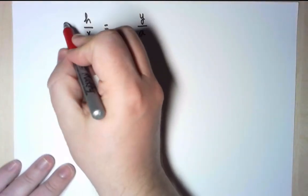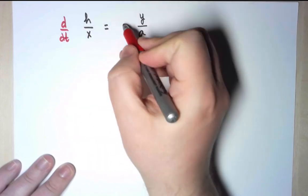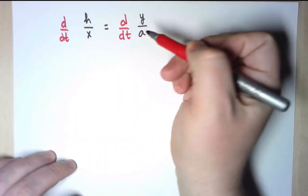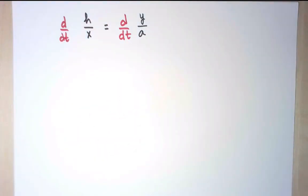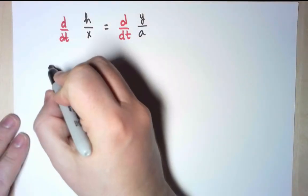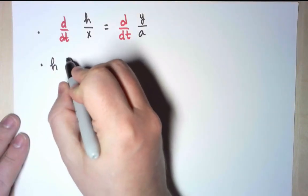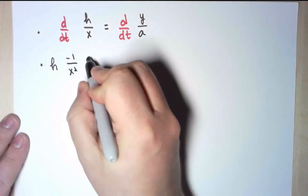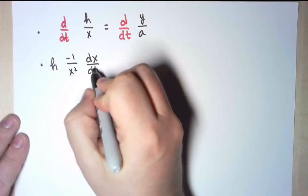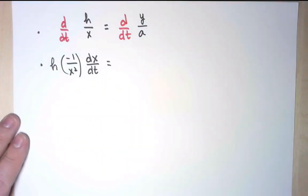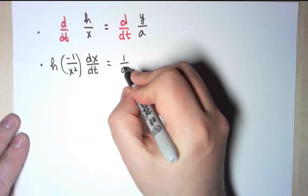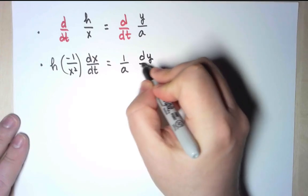Here is the equation, and the derivative of the left-hand side is going to be equal to the derivative of the right-hand side. Now remember that in this problem, h is a constant, so it comes out, and I need the derivative of 1 over x using the chain rule. That is minus 1 over x squared times its derivative with respect to time. On the other side, a is a constant, it comes out, and I am left simply with dy dt.